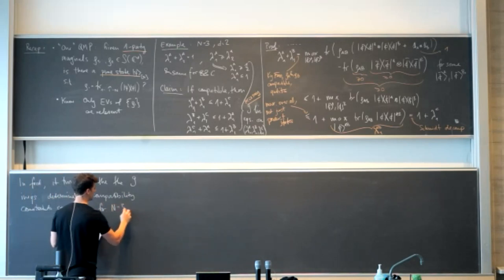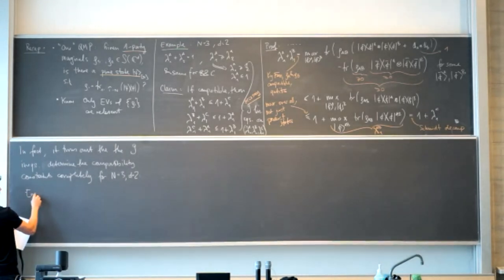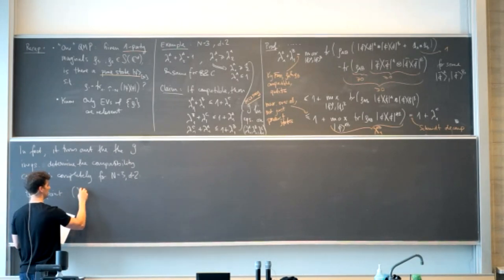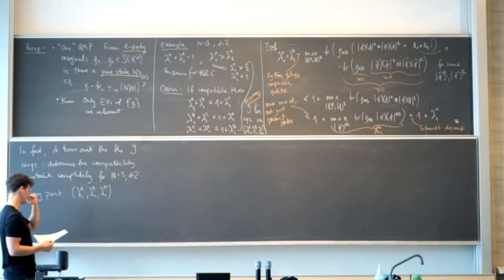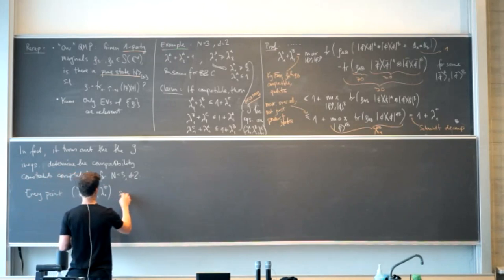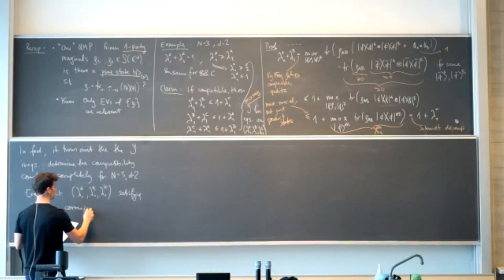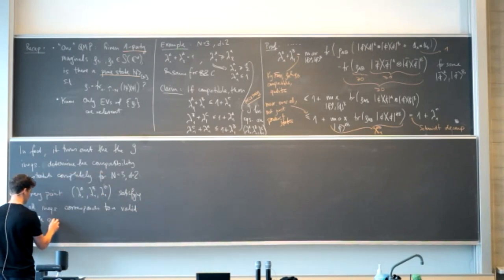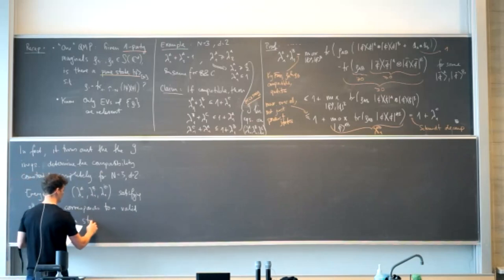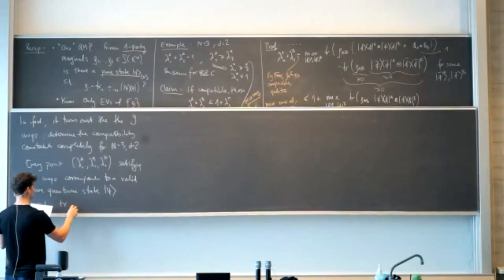The nine inequalities — actually fewer suffice but nine is safe — are sufficient and completely determine the compatibility constraints for n=3 and d=2. This means every triple of maximal eigenvalues (λ^A, λ^B, λ^C) satisfying all inequalities corresponds to a valid pure quantum state ψ — in particular a normalized vector — such that tracing out BC from ψ gives ρ_A, and cyclically for B and C.